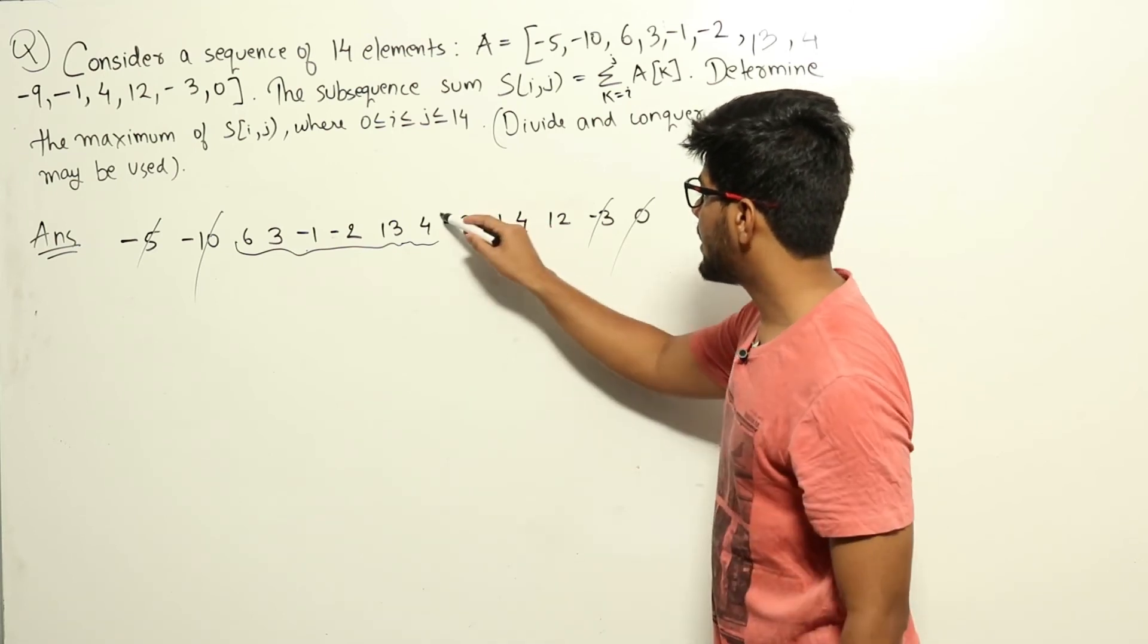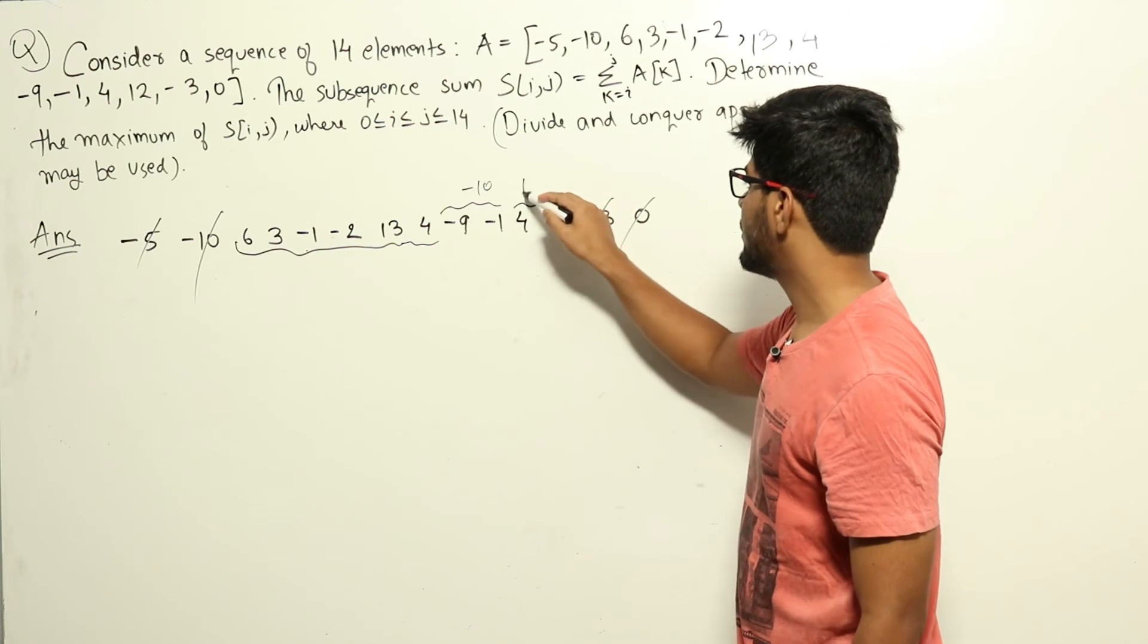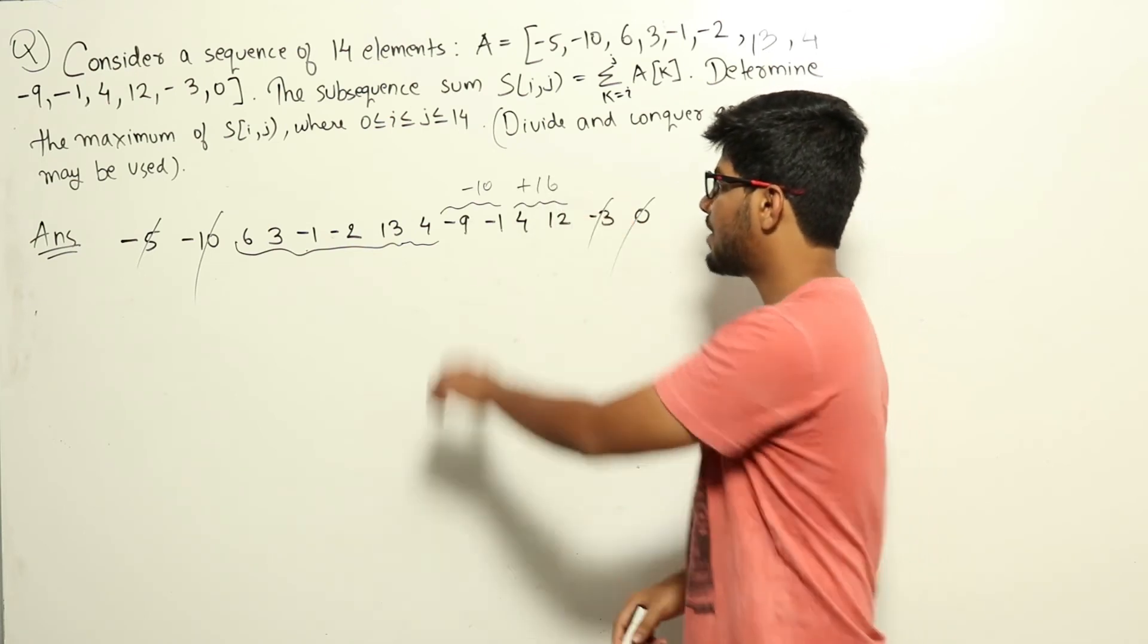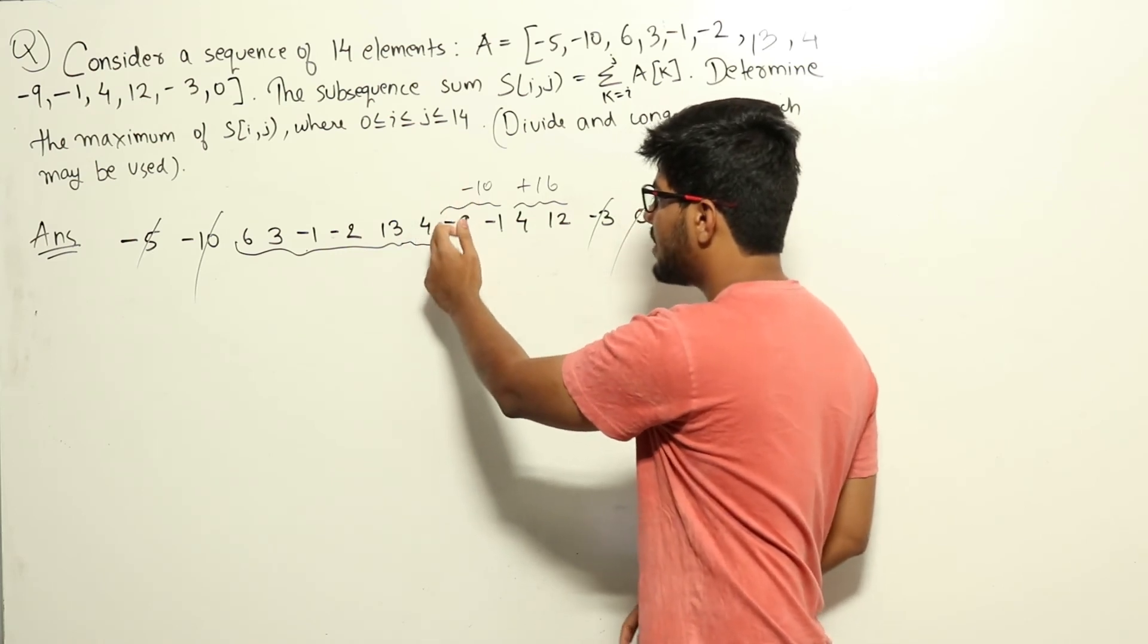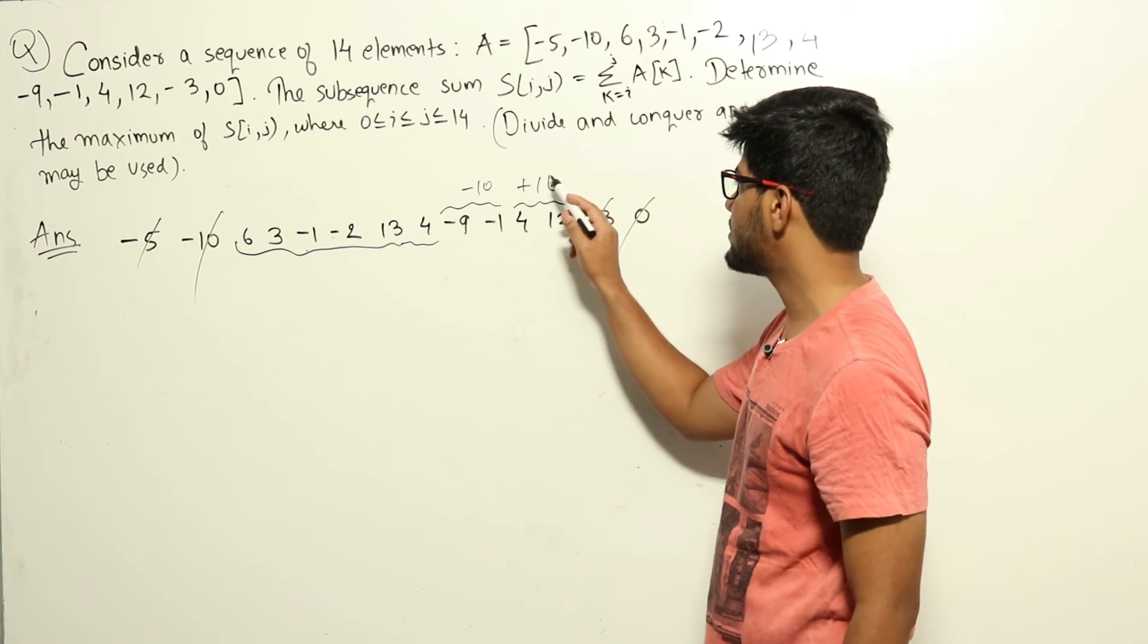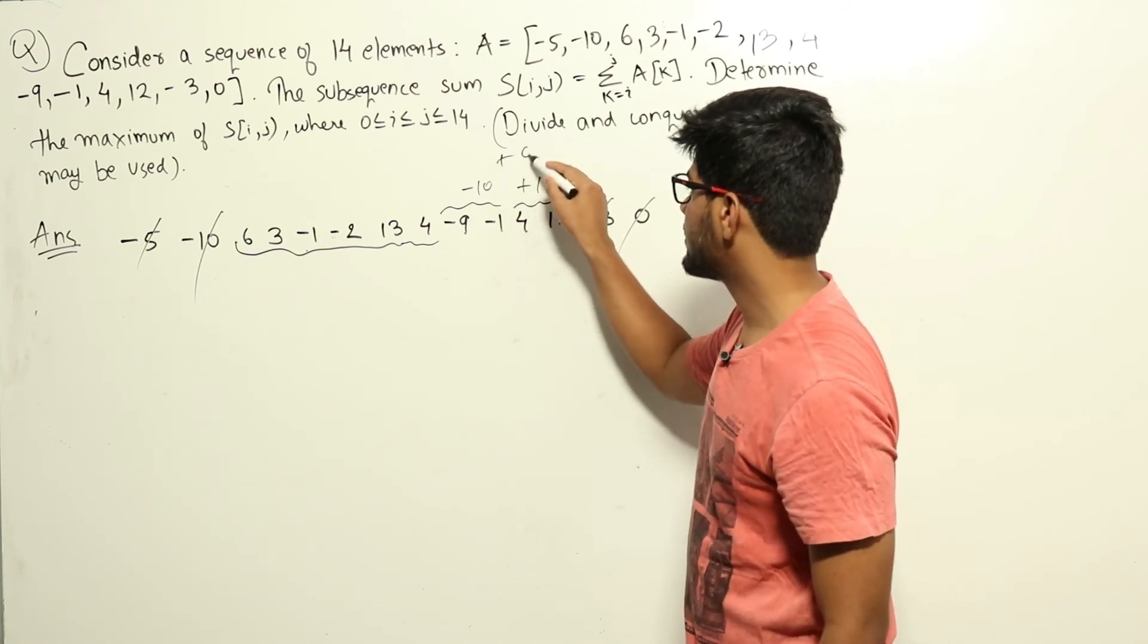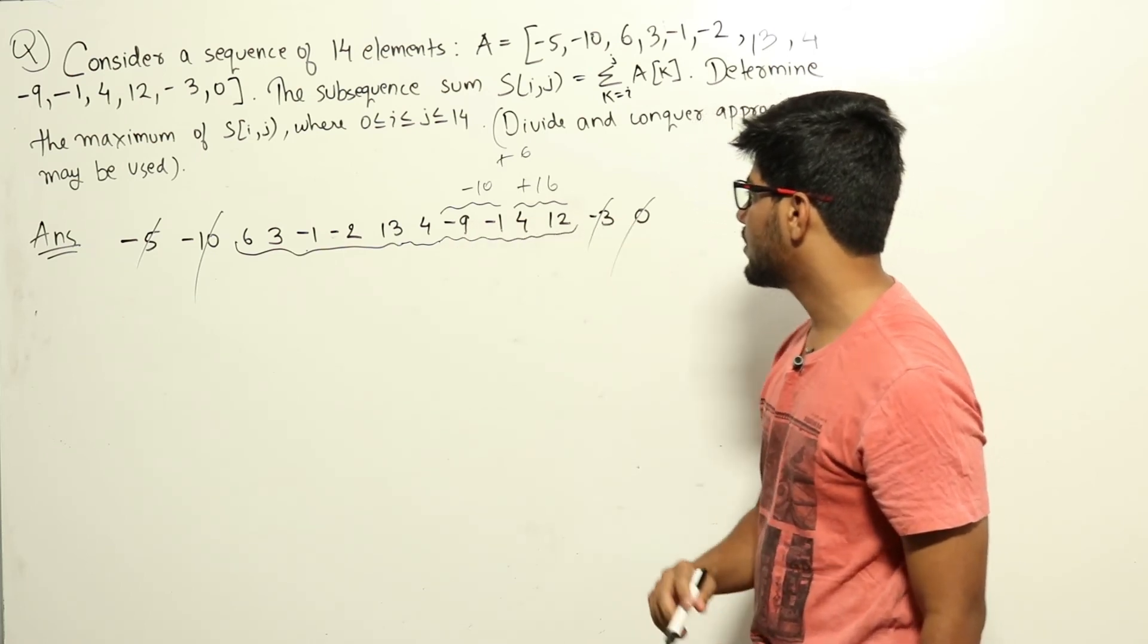This much part will give -10. This much part will give plus 16. So if I'm not taking this part, I have to stop the subsequence here. But if I take this part also, I can include this part as well which will give a total sum of 16 minus 10, that is plus 6. Now that is good for us, plus 6 is fine, so we'll include this part as well which will give plus 6 sum.